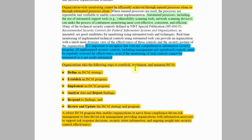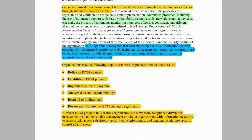Organizations take the following steps to establish, implement, and maintain ISCM: (1) define an ISCM strategy, (2) establish an ISCM program, (3) implement an ISCM program, (4) analyze data and report findings, (5) respond to findings, and (6) review and update the ISCM strategy and program. A robust ISCM program enables organizations to move from compliance-driven risk management to data-driven risk management, providing information necessary to support risk response decisions, security status information, and ongoing insight into security control effectiveness.